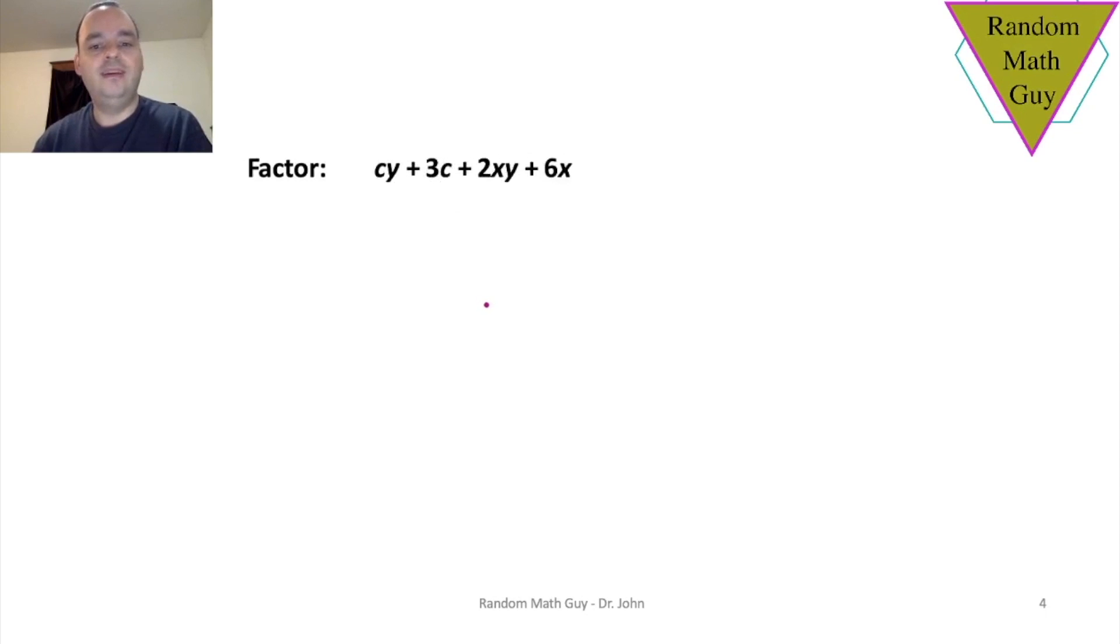All right, here's another one. This time, we can again see that there is nothing that is common to all of them. So we can divide it into two parts and observe or factor each of those pairs separately. In this first pair of terms, we see that a c is common, and that leaves us with y plus 3. In the second pair of terms, there is a 2 and there is an x that's common. So we can take the 2x out, and we can see that we have y plus 3.